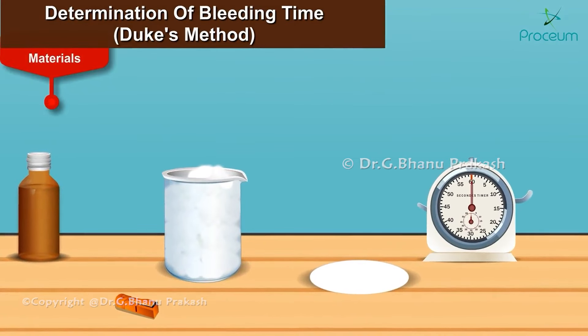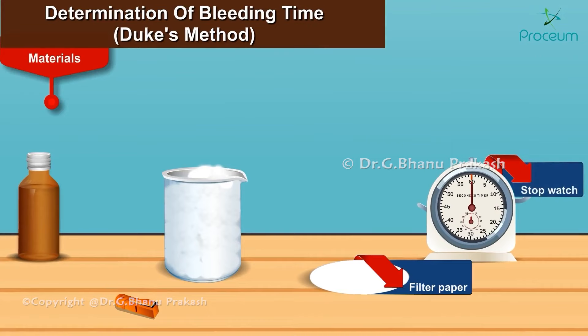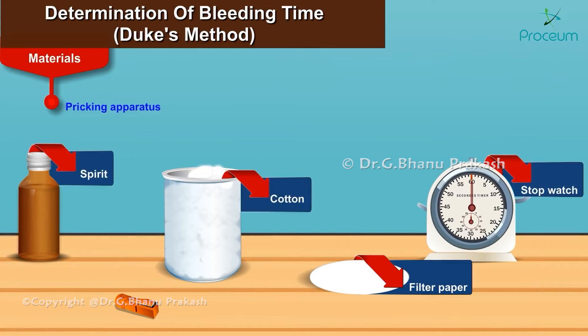The materials used for this experiment include a filter paper, a stopwatch, and a pricking apparatus which includes spirit, a cotton ball, and a lancet.